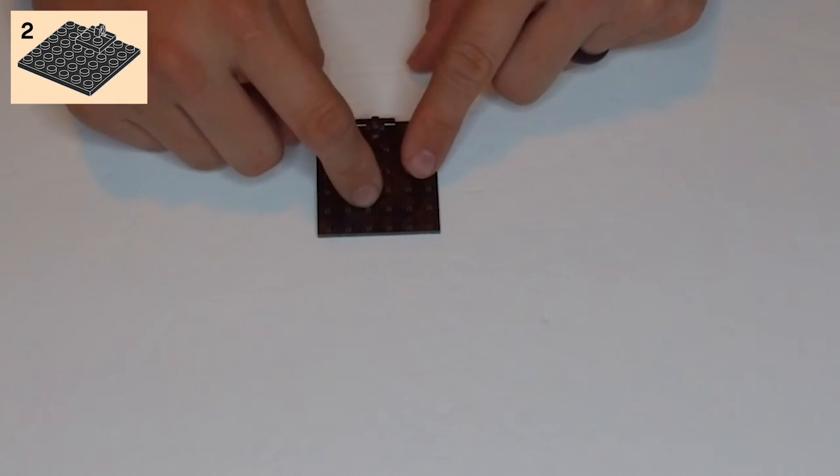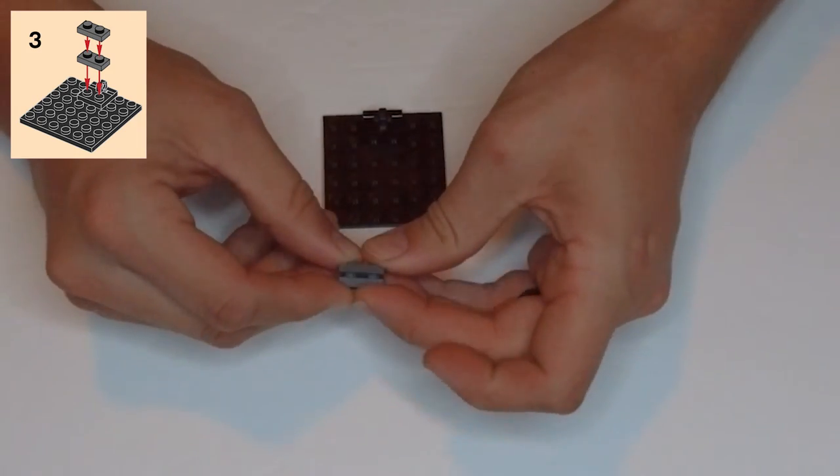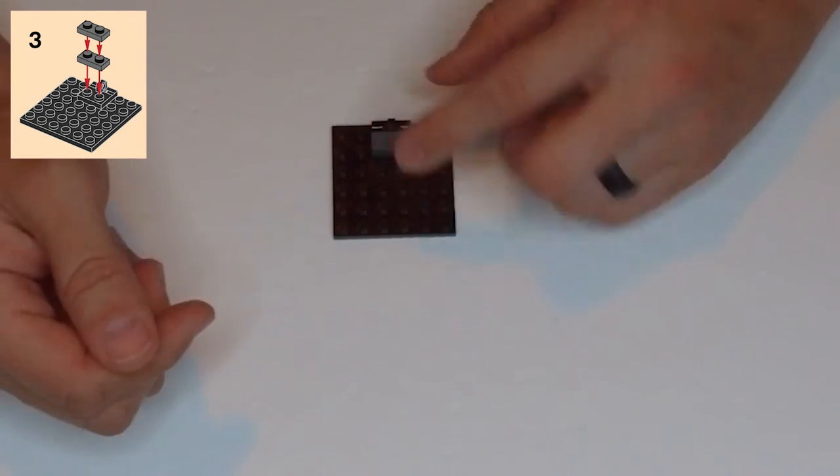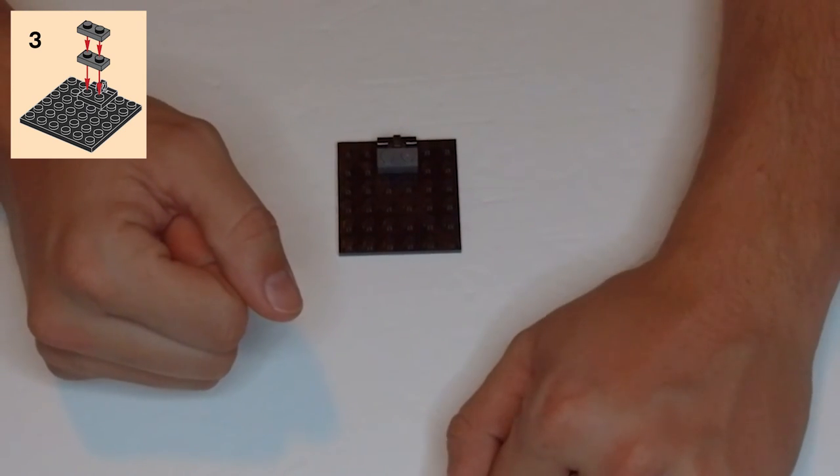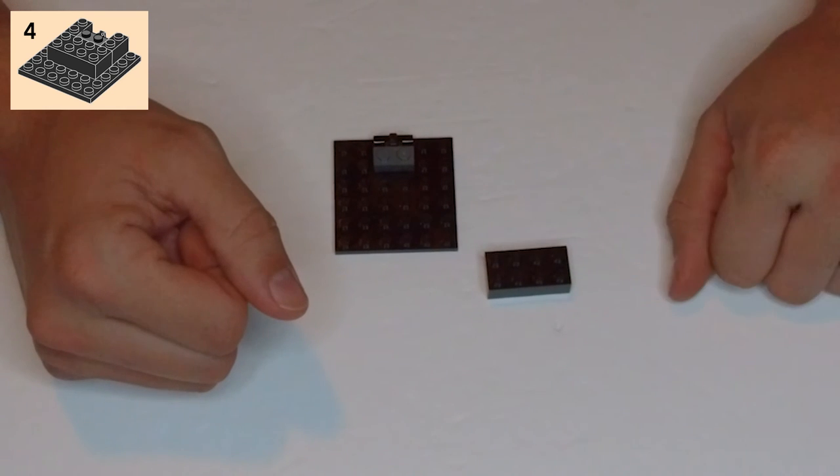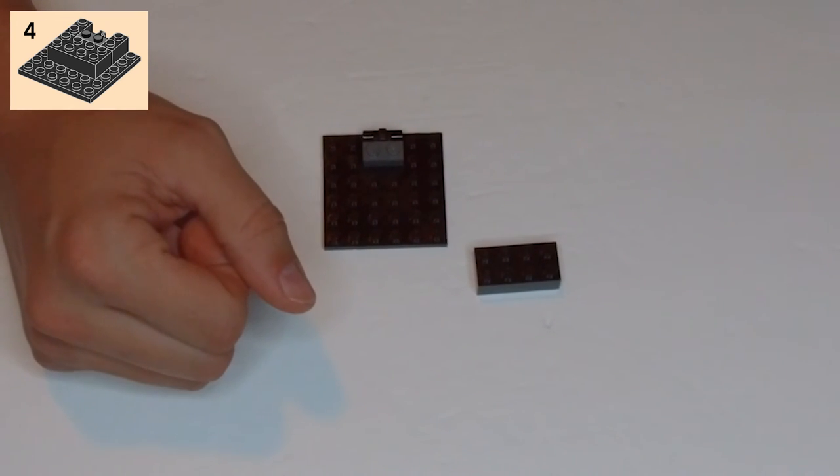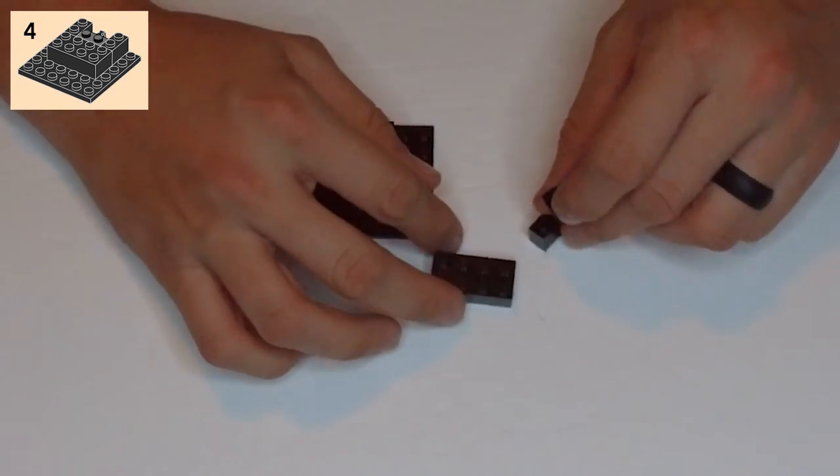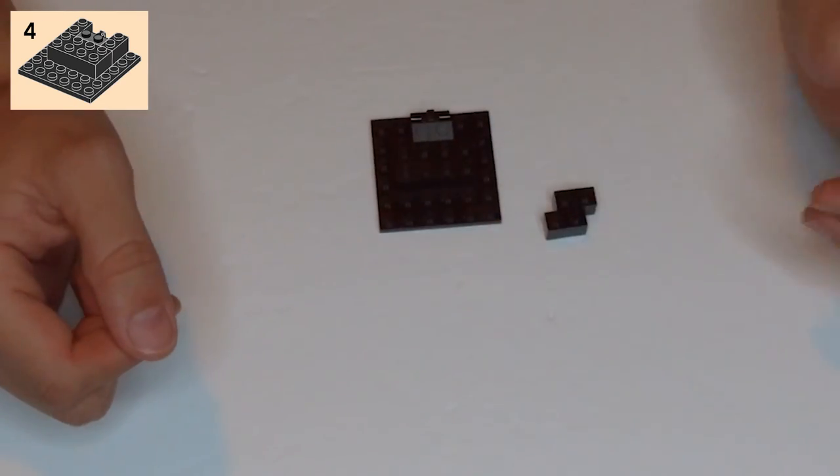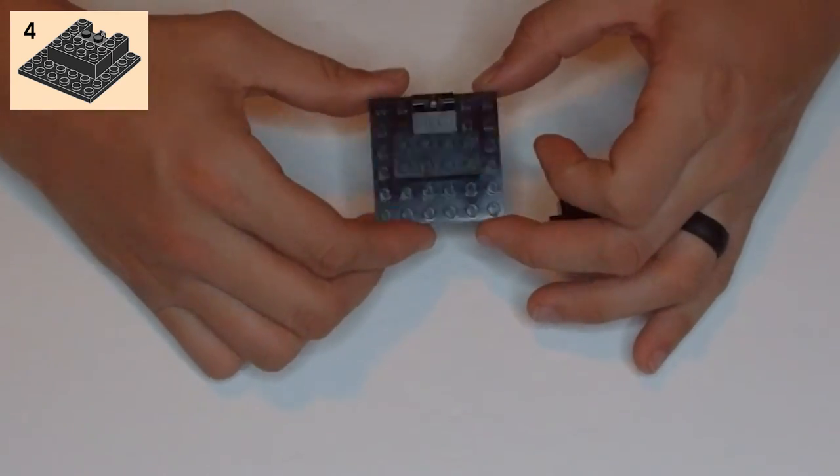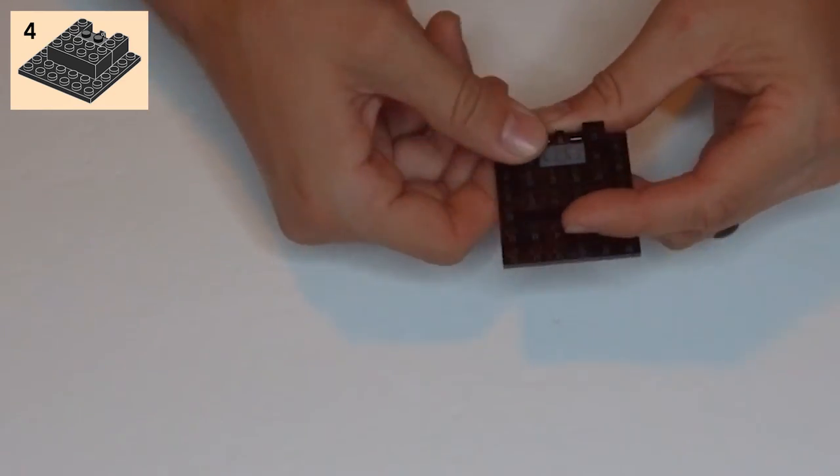So then, step three, grab these two dark gray one by two plates and put them on top of each other. And those are going to go right on top of those two studs on that hinge piece. All right, now step four, let's get a two by four block, and that's in black in case you didn't tell. Then we also have two one by two blocks in black. And the two by four is going to go right in the center of our black plate, it's invisible now. And then these one by twos are going to go behind that on either side of that hinge plate.